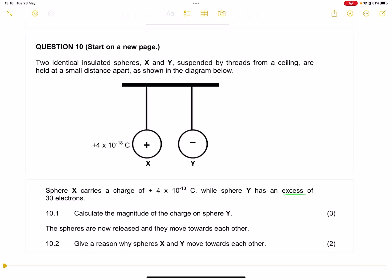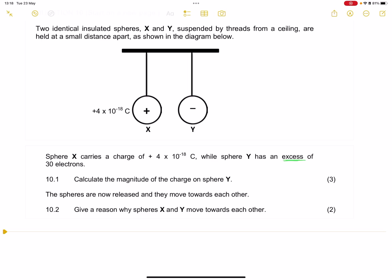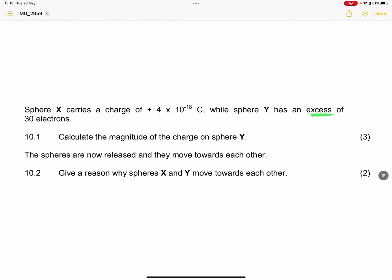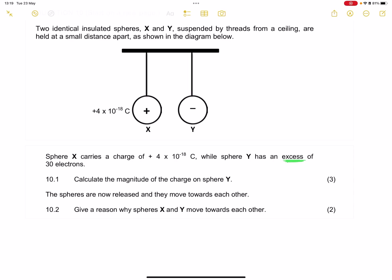They say to us, we've got two identical insulated spheres, X and Y, suspended by threads from a ceiling, held at a small distance apart as shown in the diagram. Sphere X carries a charge of 4 times 10 to the minus 18 C, while sphere Y has an excess of 30 electrons. Note in this case, I've already highlighted there that you've got excess electrons, so that simply means that sphere Y will actually be negatively charged.